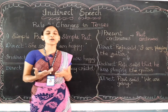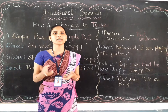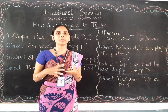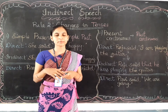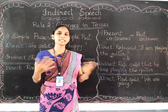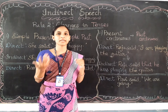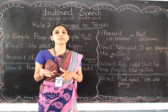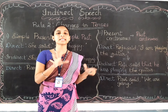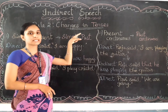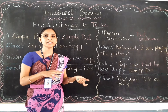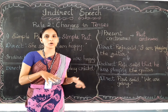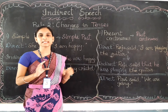Hello students. In this video you are going to learn about the second rule of converting direct speech into indirect speech. We have been learning about the types of speeches, mainly direct speech and indirect speech. In the previous video we learned the first rule, which is the changes in pronouns. Now we are going to learn about the second rule, that is changes in tenses — what kind of changes would happen to the tenses and to the verbs.